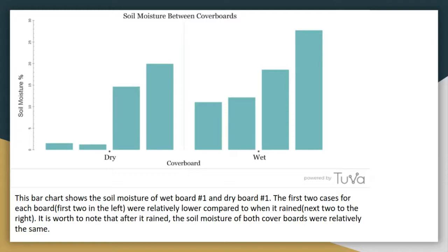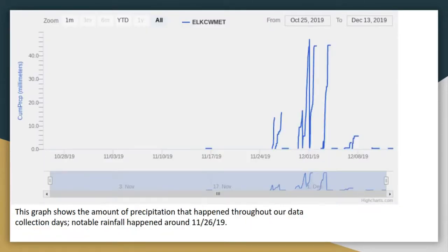These bar charts show soil moisture. The first two bars on each graph are before rain, and the last two are after rain. You can see how wet coverboards had more moisture than dry boards, and how dry boards had little moisture to begin with, but after the rain it increased. This graph also shows precipitation throughout our whole data collection process. Notable precipitation began November 26, with precipitation overall beginning on November 17.